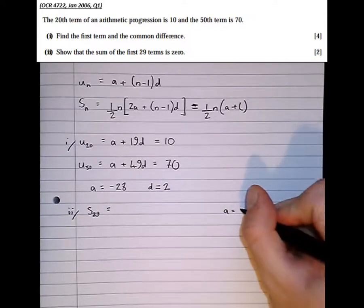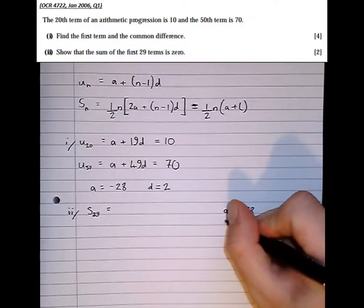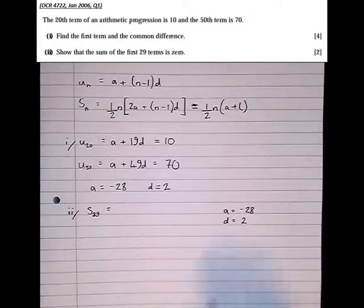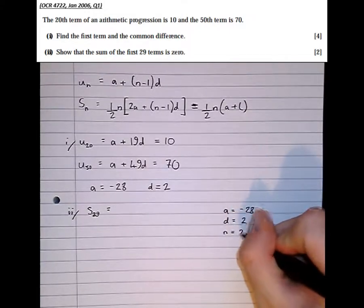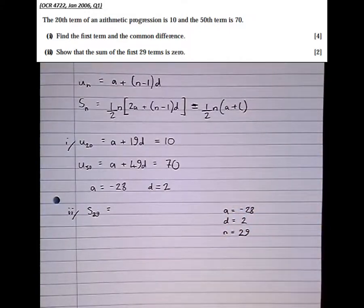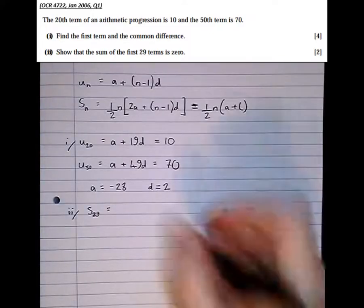So we can see that a is minus 28, d is 2, and the number of terms that we're summing n is 29. So the sum of the first 29 terms is